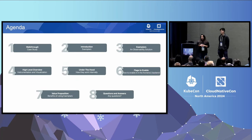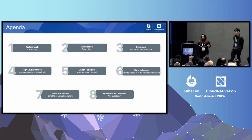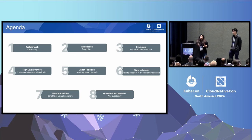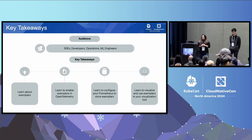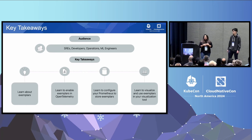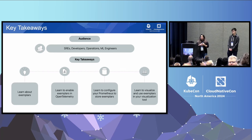We'll just do a quick walkthrough of our agenda. We'll start with a case study and a demo of what we're going to be talking about, then talk about what exemplars are, and then go into a high-level overview before diving deeper into the details of exemplars and how to set them up. Then we'll talk about the value of using exemplars for your service, and finally open it up to Q&A. This talk is mainly geared towards SREs, developers, operations experts, ML engineers — basically anyone interested in improving the reliability and observability of your service.